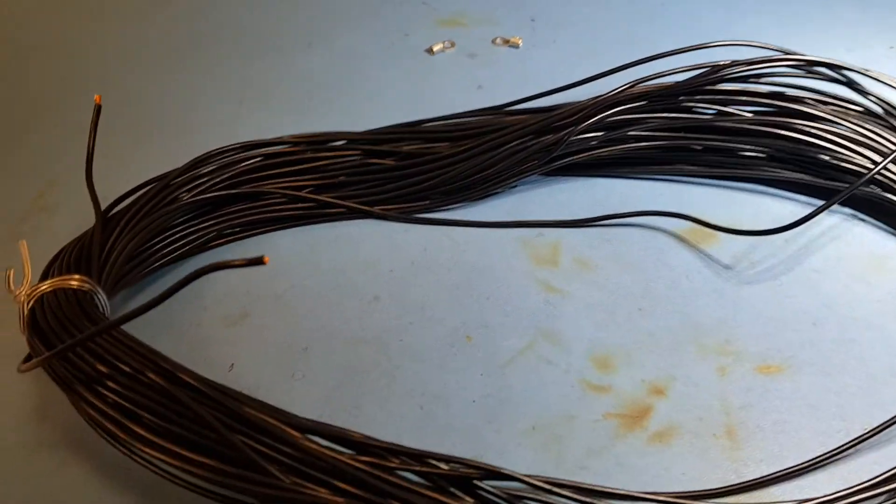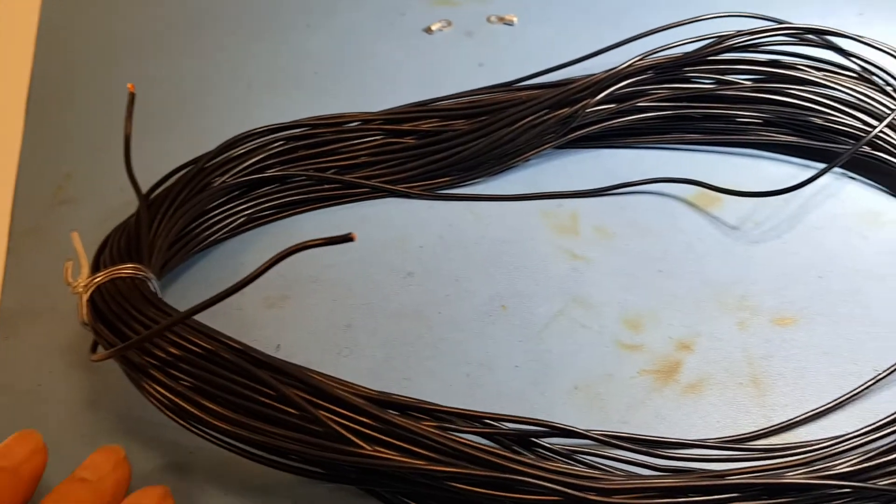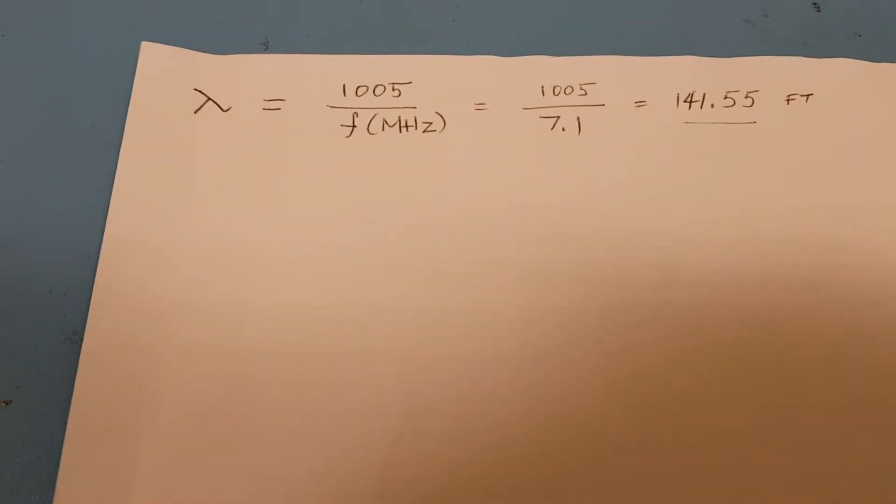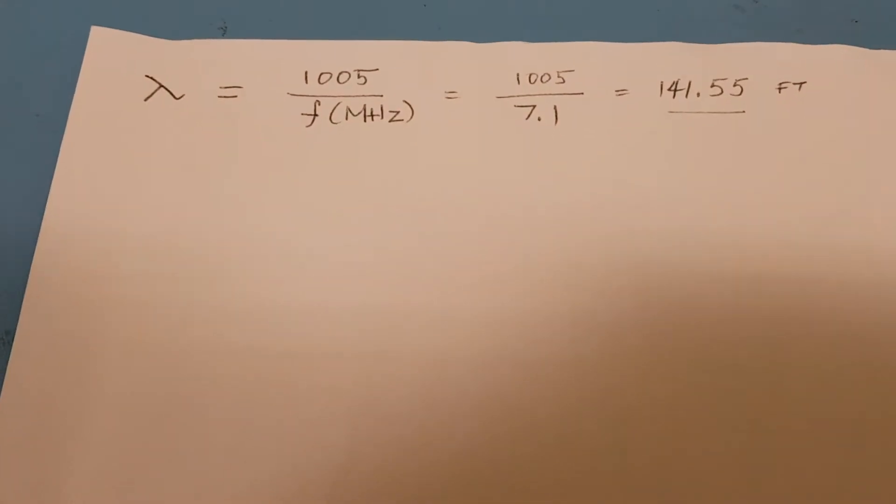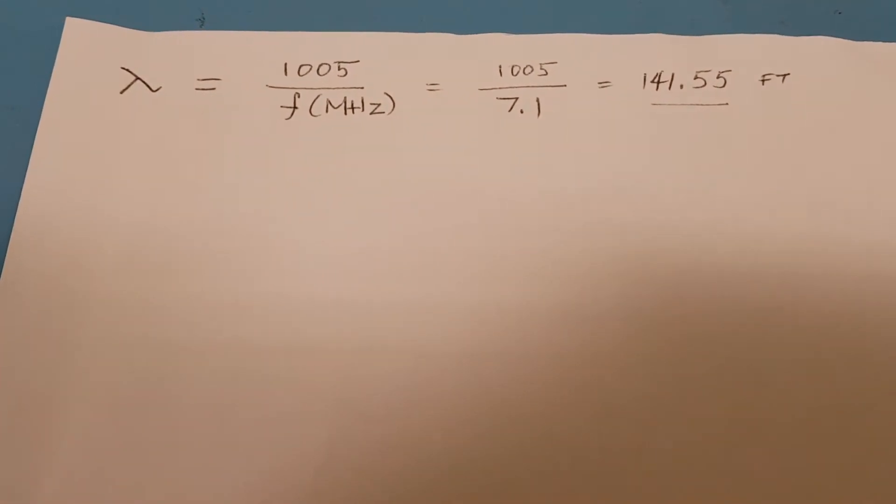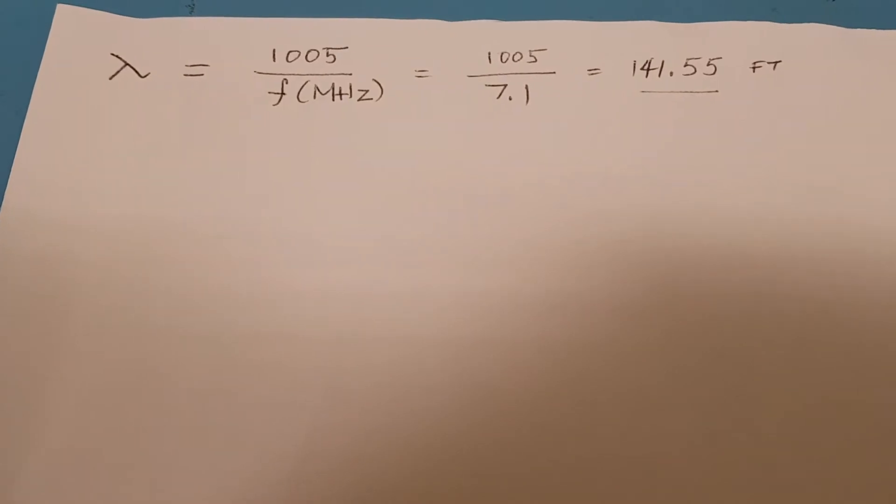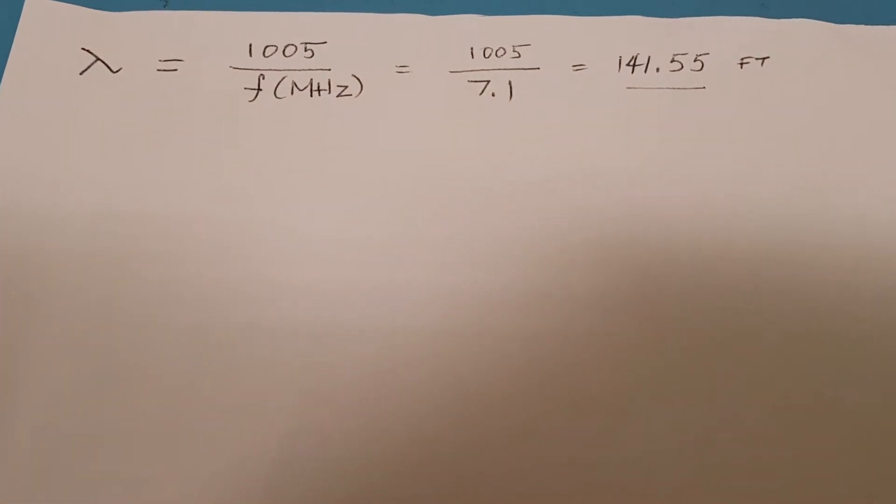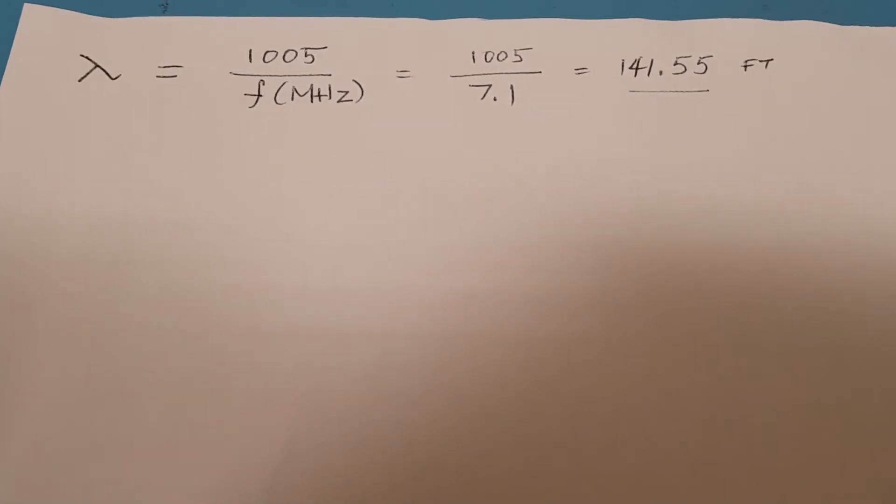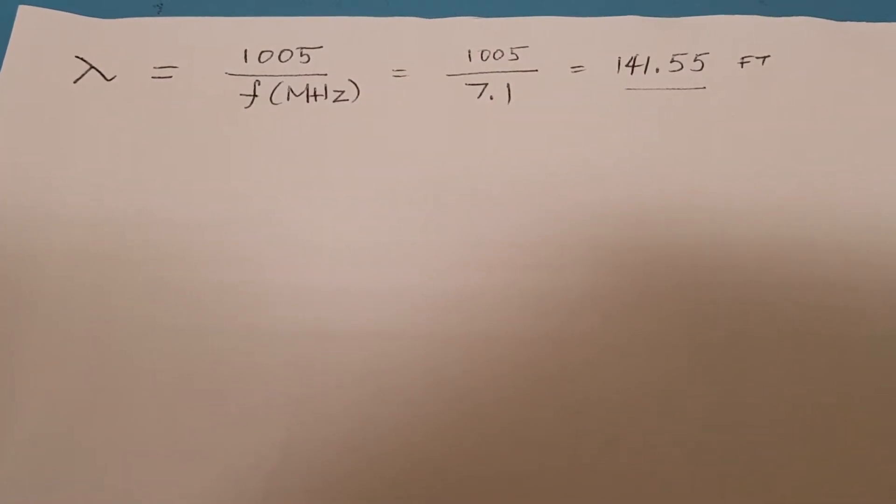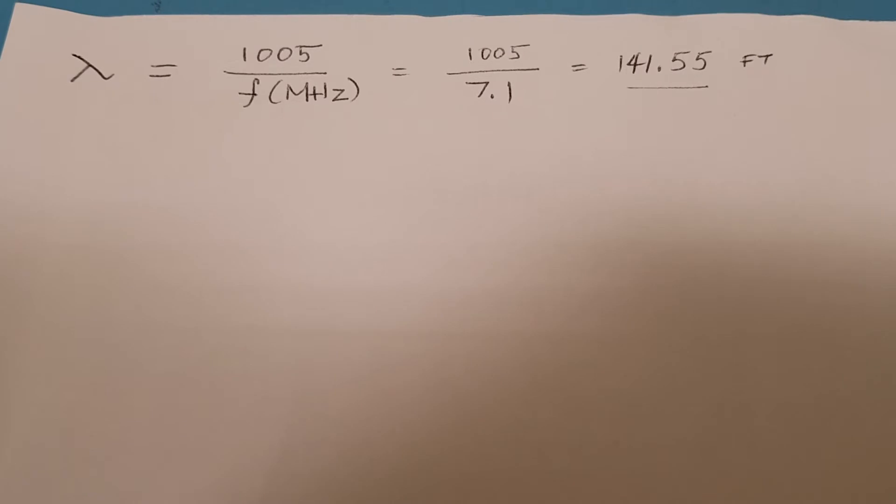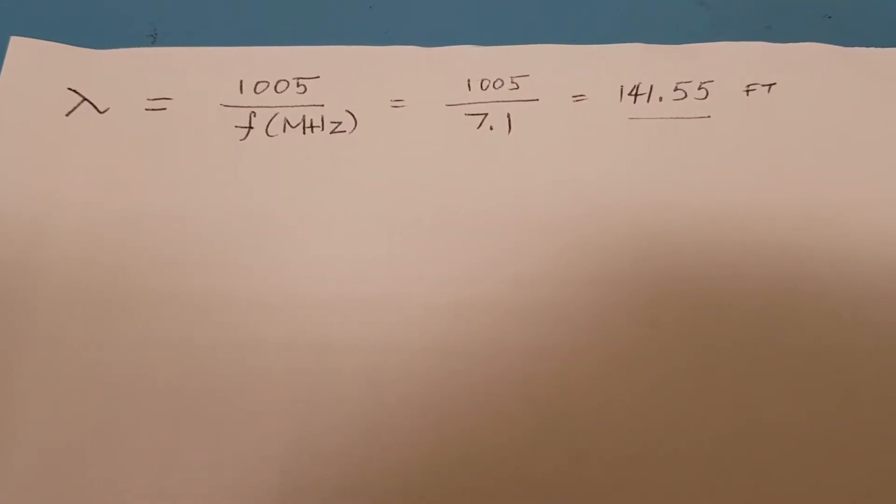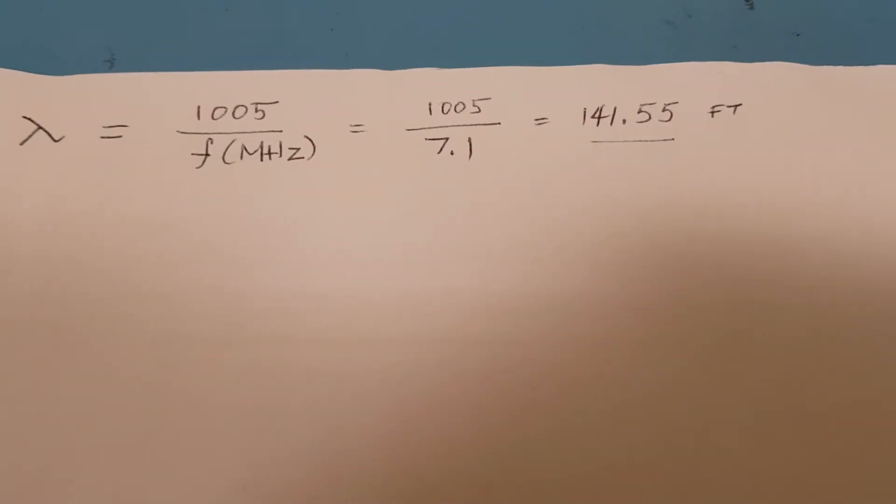The length is based on the formula: 1005 over frequency in megahertz. Here you can see I'm using 7.1 megahertz because here in the UK the 40 meter band runs from 7 megahertz to 7.2 megahertz, so I'm going to operate the antenna in the middle of the band.